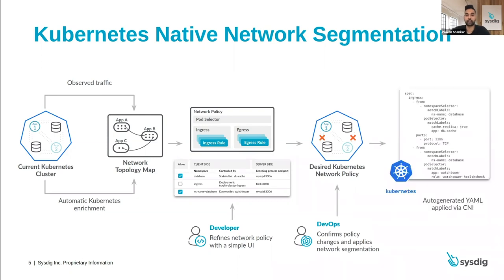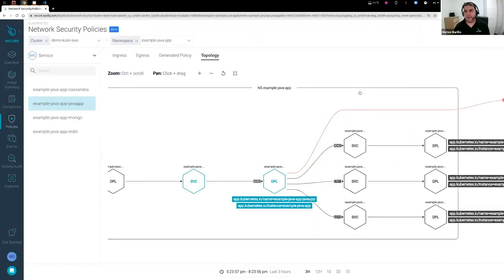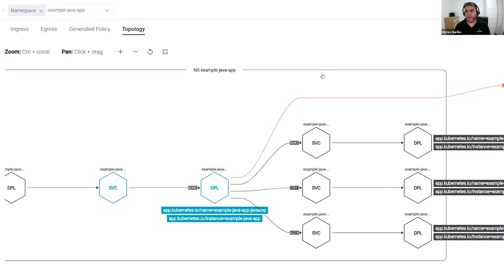We automatically generate the Kubernetes network policy and allow you to apply it directly via the CNI, like Calico. You don't have to reinvent the wheel — there's no approach that interferes with the infrastructure. We're using native controls to apply the segmentation inside your cluster. Let's see how this workflow works in practice — let's assume that I'm the developer of this application.